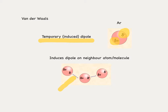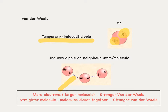The van der Waals interaction is affected by a couple of things. Firstly, the more electrons or the larger the molecule, the stronger the van der Waals. Going down group 8 — helium, neon, argon, krypton, xenon — the van der Waals forces increase and therefore boiling point increases. Also in organic chemistry, the straighter the molecule, the closer molecules can be together and the stronger the van der Waals forces. Increased branching in a molecule results in a lower boiling point.